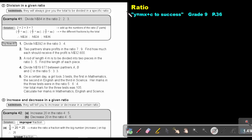Part 29. We are going to continue with ratio. You will find this on page 36 in the Namibia Mathematics Grade 9 textbook y equals mx plus c to success.